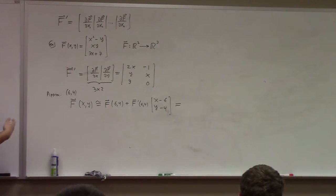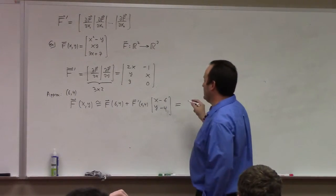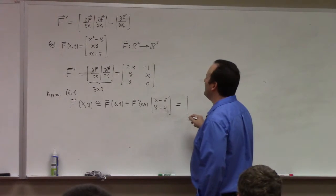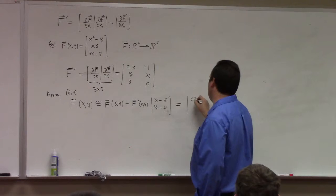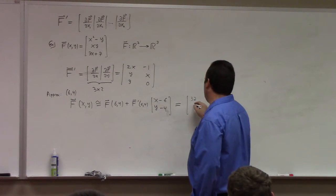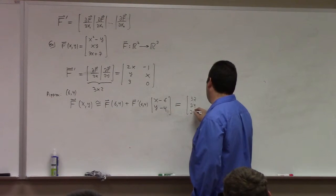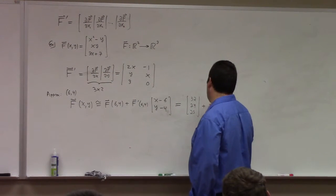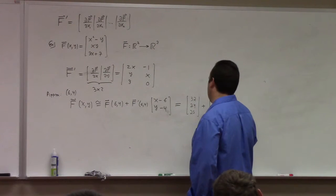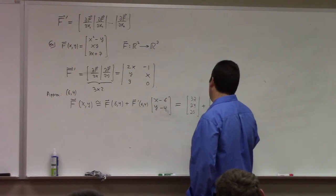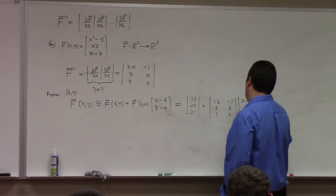It's the tangent line, but this is more general. F of 6, 4 is what? Oh, how did you do that to me? 36 minus 4 is 32. 6 times 4 is 24. 3 times 6 is 18. 18 plus 7 is 25. Interesting. And then my matrix, oh yeah, what are you doing to me? 12, 6, 3, minus 1, 6, 0, times the vector x minus 6, y minus 4.